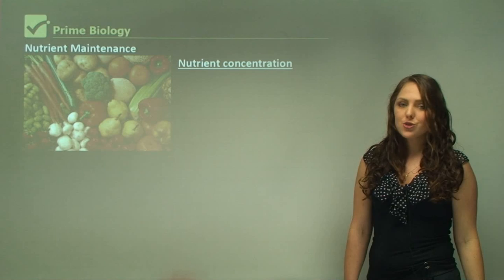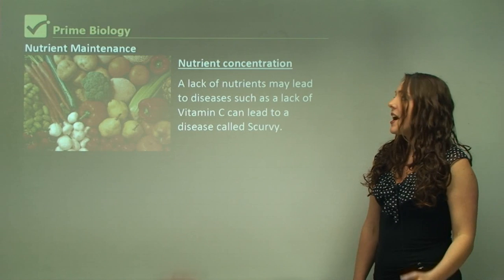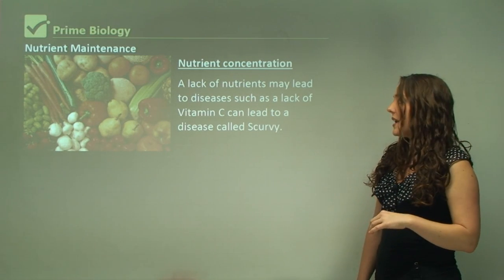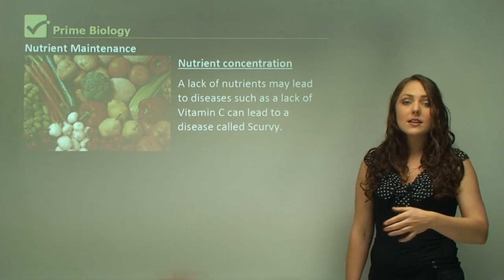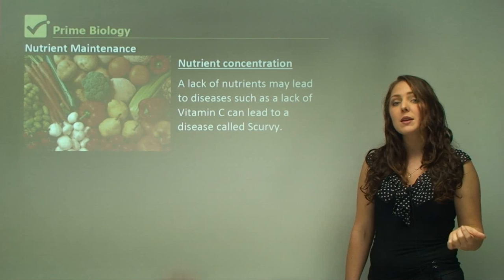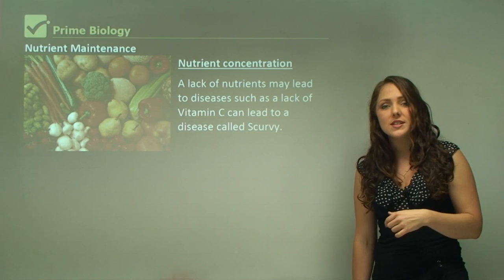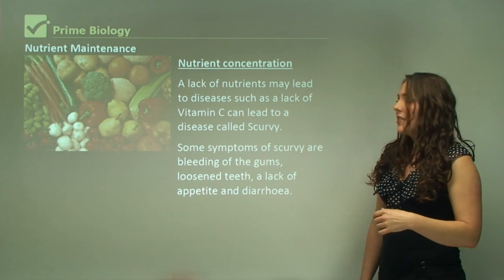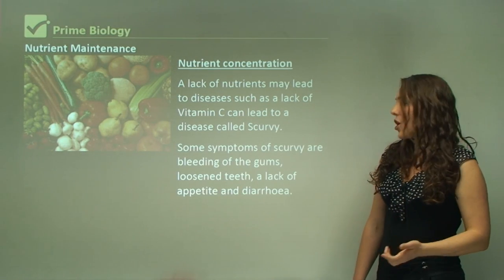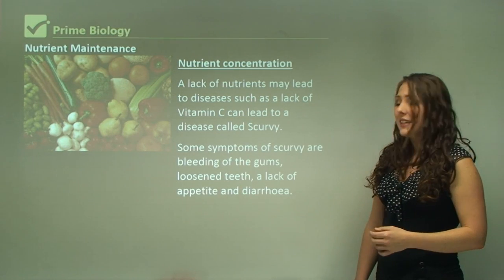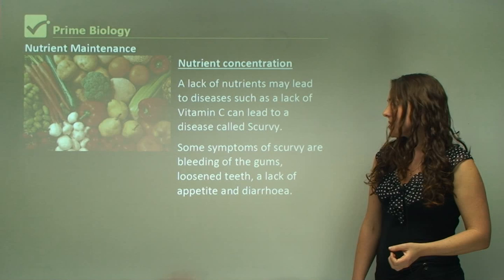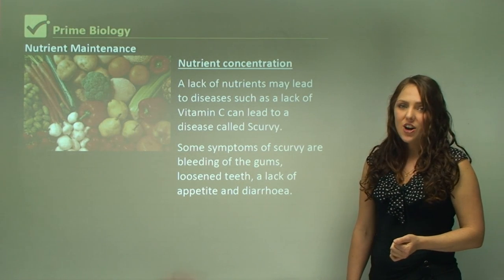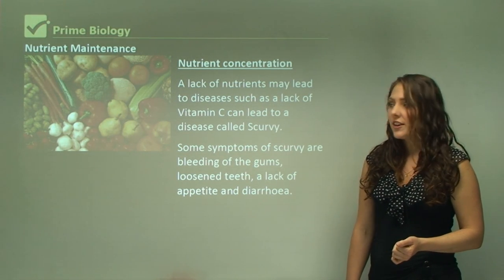Nutrient concentration is also regulated through homeostasis. A lack of nutrients may lead to disease — for example, a lack of vitamin C can cause scurvy. The symptoms of scurvy include bleeding of the gums, loosened teeth, lack of appetite, and diarrhea.